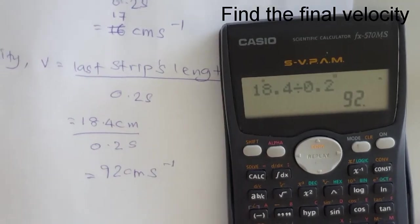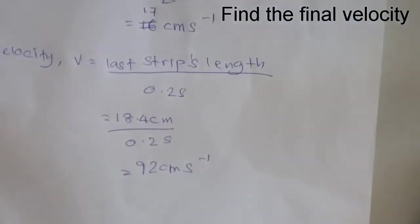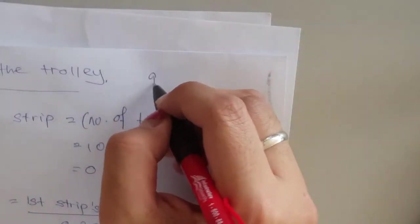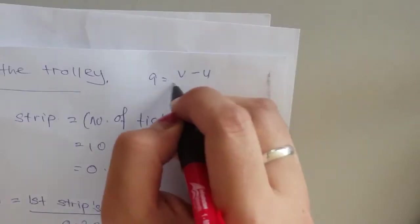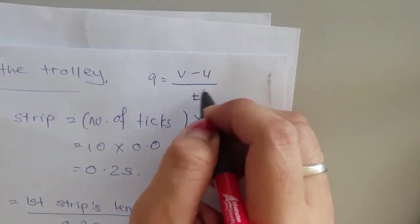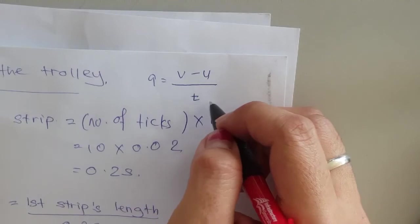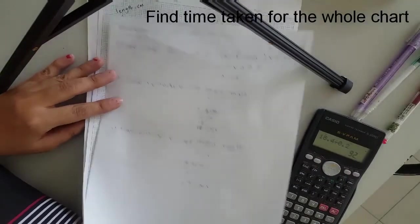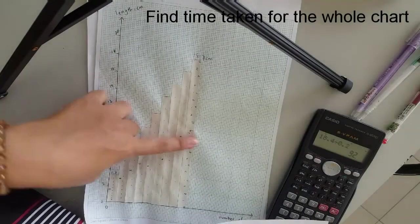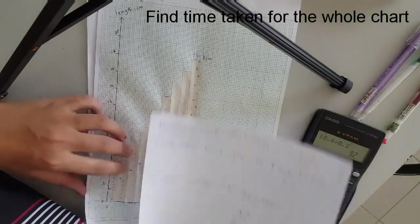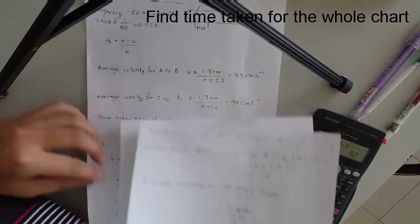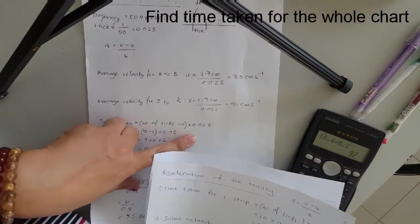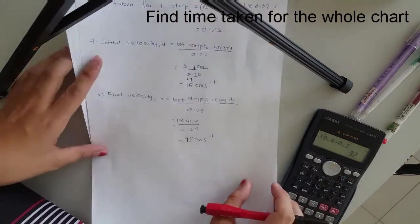So next is actually to calculate the acceleration because our acceleration formula is a equals to V minus u over t. Now, the problem is this t. This is actually the total time taken from the first strip, which is from 1 all the way to 9. So like the previous one, our time taken, our time taken is number of ticks minus 1 times 0.02 seconds.